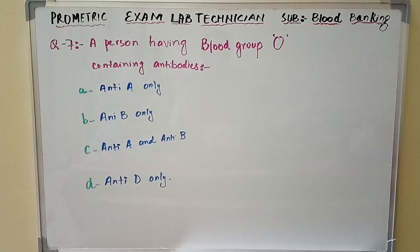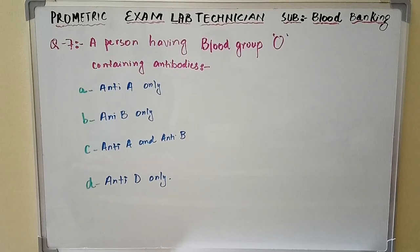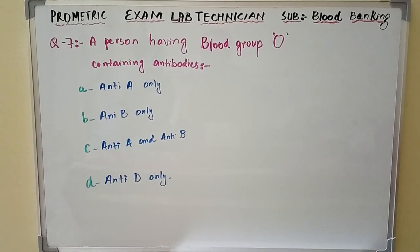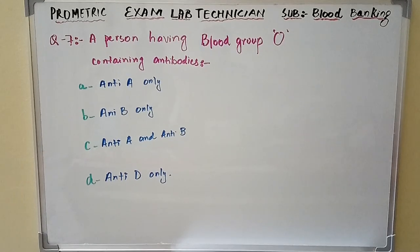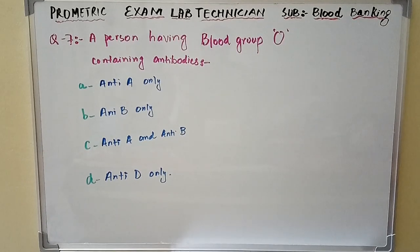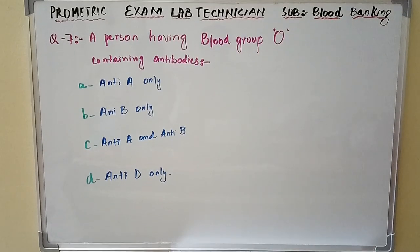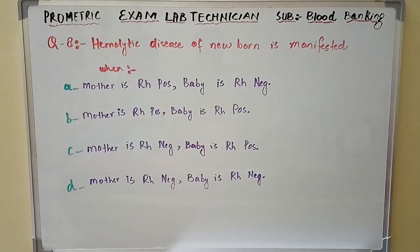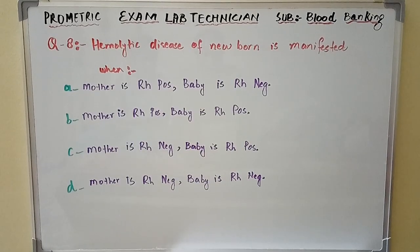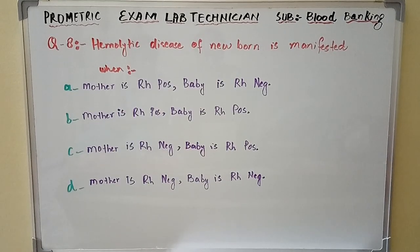Question number seven: A person having blood group O contains which antibodies? Option A: anti-A only. Option B: anti-B only. Option C: anti-A and anti-B. Option D: anti-D only.